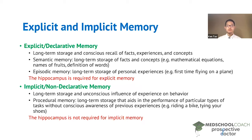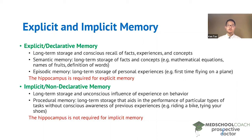It's also important to note that the hippocampus is not required for implicit memory. After Henry Molaison underwent the operation to remove his medial temporal lobes, while he was not able to form new explicit memories, he was still able to form implicit memories. They were able to have him partake in complicated tasks, and after multiple trials he became better and better at performing them, even though he was not consciously aware that he had performed them before.